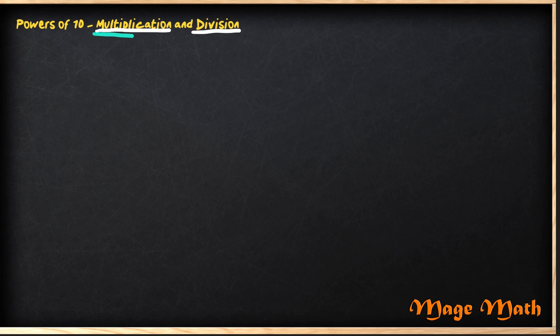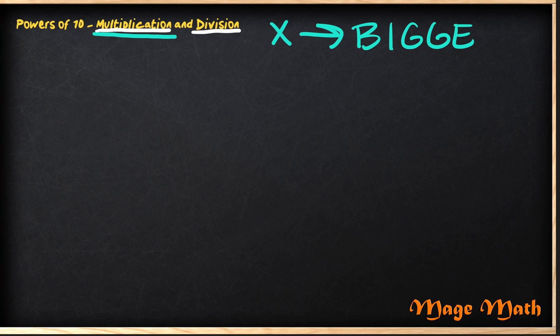Let's start by looking at multiplication. We know that when we multiply, a number gets bigger. This means that when we're looking at a decimal, the decimal will need to move to the right. Let's review an example for better understanding.